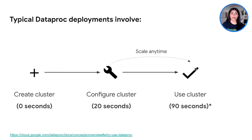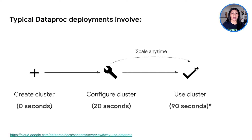On the other hand, a typical Dataproc deployment is much simpler and it's only a 3-step process that can easily be performed by one person. Creating the cluster takes no time, configuring it takes around 20 seconds, and your cluster is ready to be used in 90 seconds. Using Cloud Dataproc and Google Cloud Tools can save you time, money, and effort because adopting a cloud-based approach can make your overall solution simpler and easy to manage.